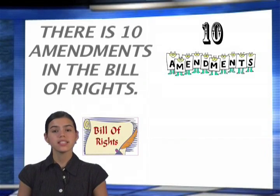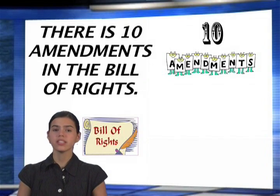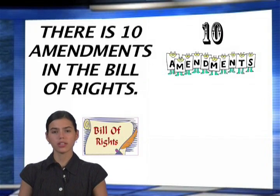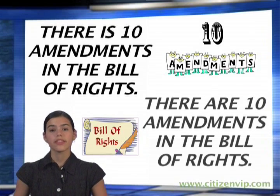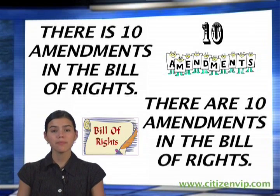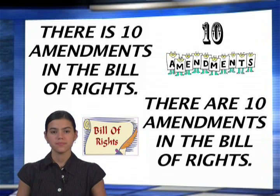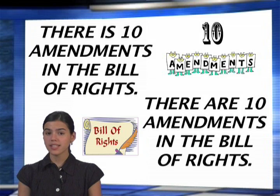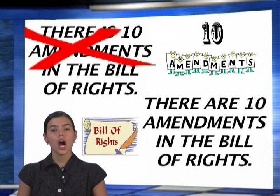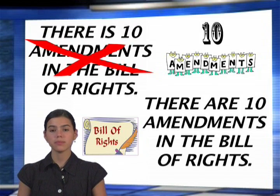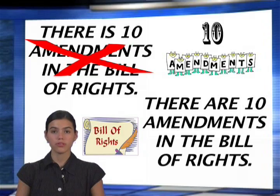'There is 10 amendments in the Bill of Rights' or 'there are 10 amendments in the Bill of Rights.' The right way of expressing the sentence is 'there are 10 amendments in the Bill of Rights.'